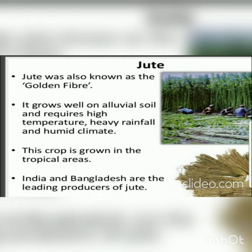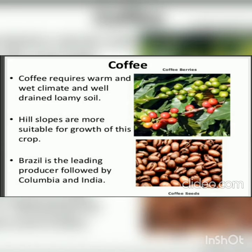Jute is also known as golden fiber. It grows well on alluvial soil and requires high temperature, heavy rainfall, and a humid climate. This crop is grown in tropical areas, and India and Bangladesh are the leading producers of jute.